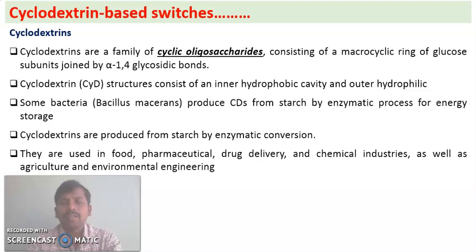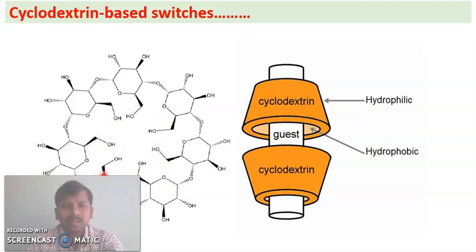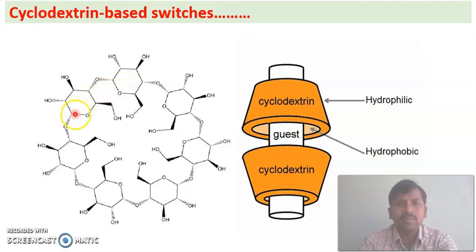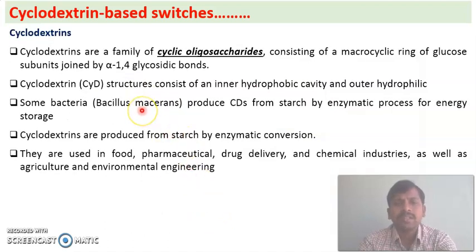We can see that in the picture. This is the structure of cyclodextrins — this is beta-cyclodextrin. We have here 7 glucose subunits and these glucose subunits are joined by alpha-1,4 glycosidic bonds. The important characteristic of cyclodextrins is that they consist of an inner hydrophobic and outer hydrophilic nature.